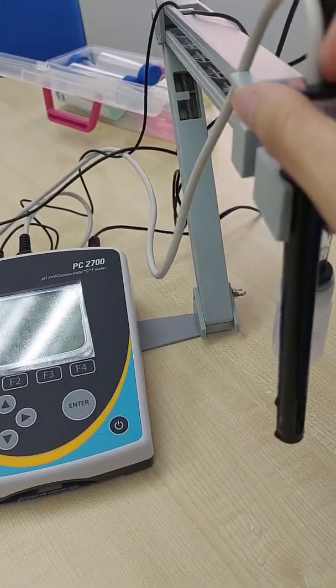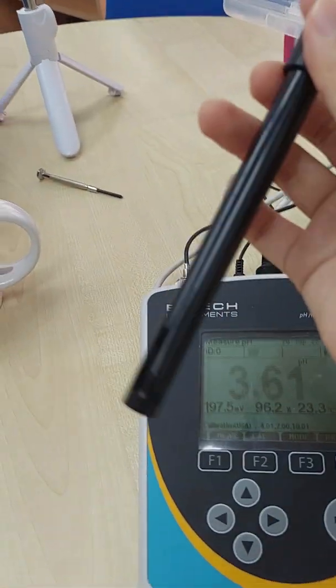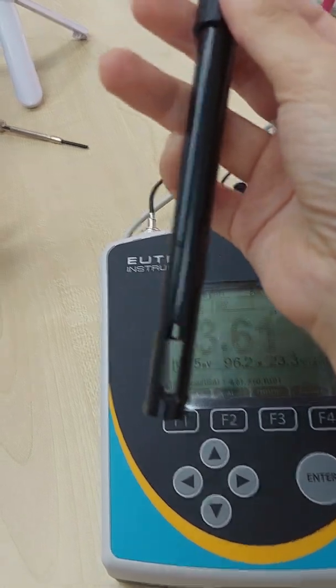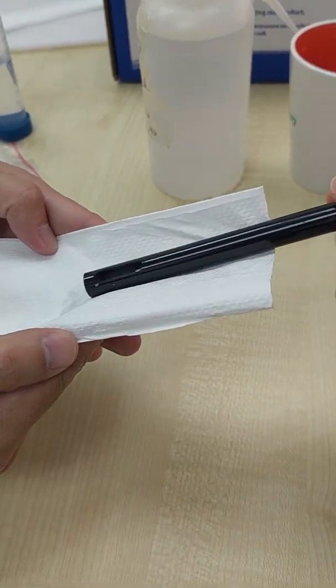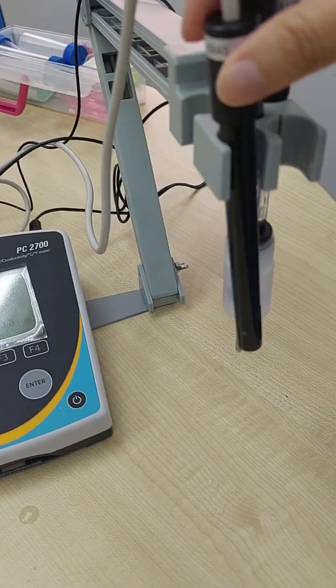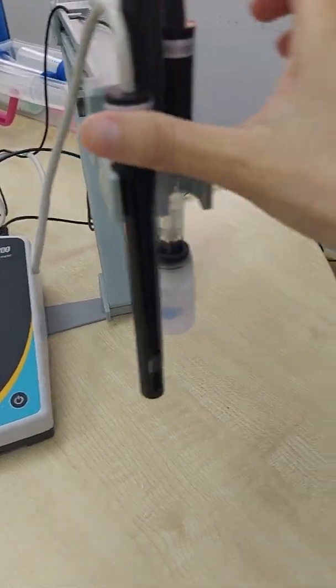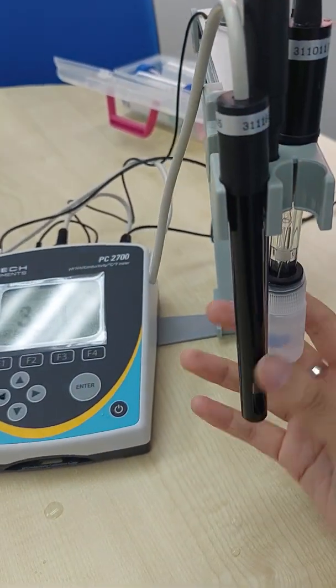And then for conductivity, there is not much maintenance. You just store it dry. So for conductivity, you can rub it, it doesn't matter. Just for pH, do not rub it. So these are the maintenance for these two probes.